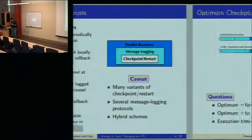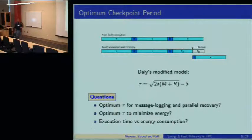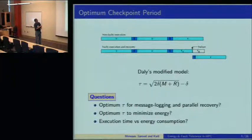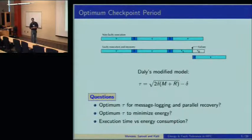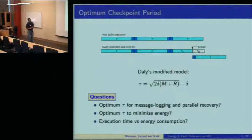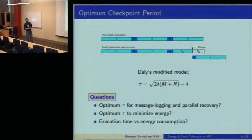All these protocols are based on checkpoint restart, so a natural question is how often should a system checkpoint. Here I have a diagram with a variable tau—the checkpoint period. The program executes for tau time units, then checkpoints, with delta being the checkpoint latency. You compute for tau units, checkpoint, compute for tau units, checkpoint, and so on.